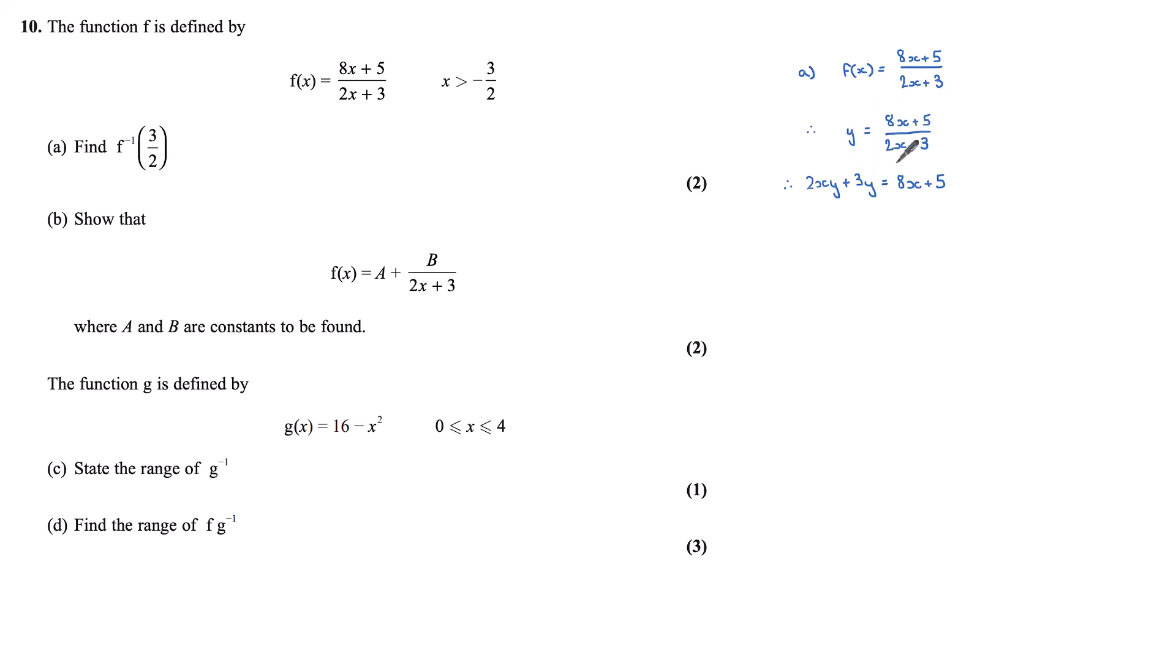Multiplying both sides by 2x + 3 gives me 2xy + 3y = 8x + 5. Now I want x equals, so I want to bring my x's to the left hand side. Subtracting 8x and subtracting 3y from both sides gives me 2xy - 8x = 5 - 3y.